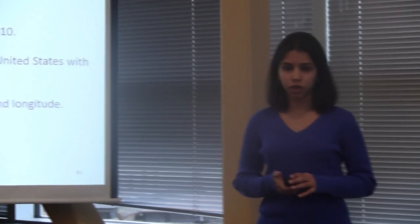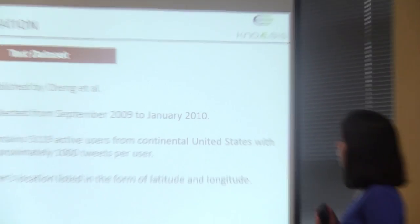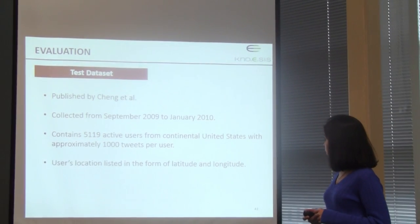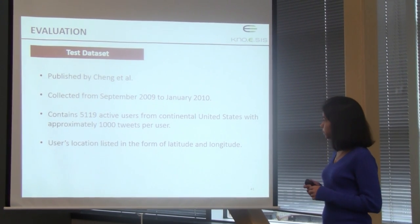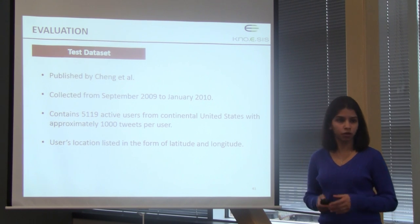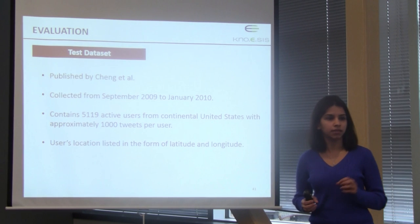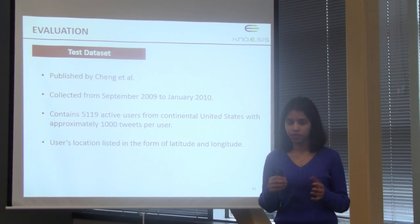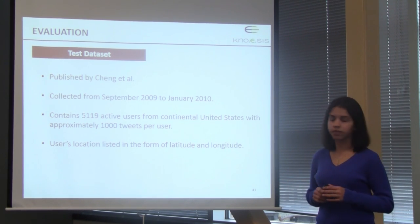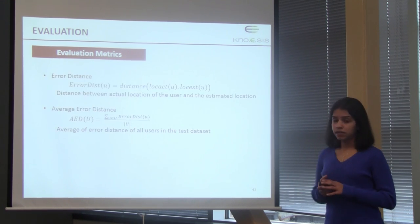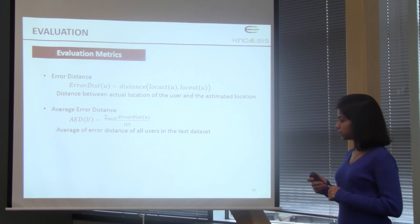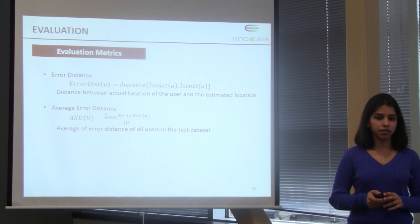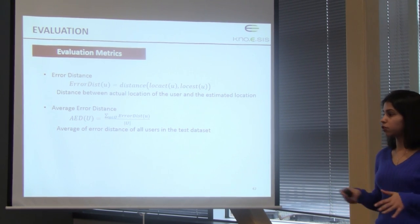We evaluate our approach on a publicly available dataset published by Cheng et al., collected from September 2009 to January 2010. It contains 5,119 active users from continental United States with approximately 1,000 tweets per user. The user's location is listed as latitude-longitude. We extract the lat-long of each predicted location from Wikipedia and compute distance using the Haversine formula.